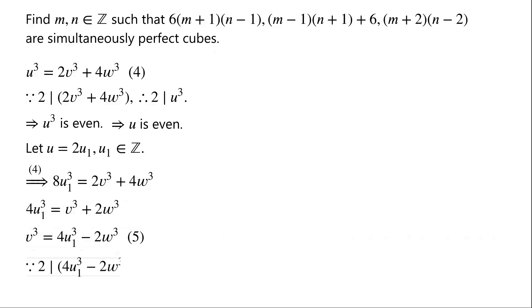Because 2 divides 4u₁ cubed minus 2w cubed, so 2 divides v cubed. That is to say, v cubed is even. So v must be even.